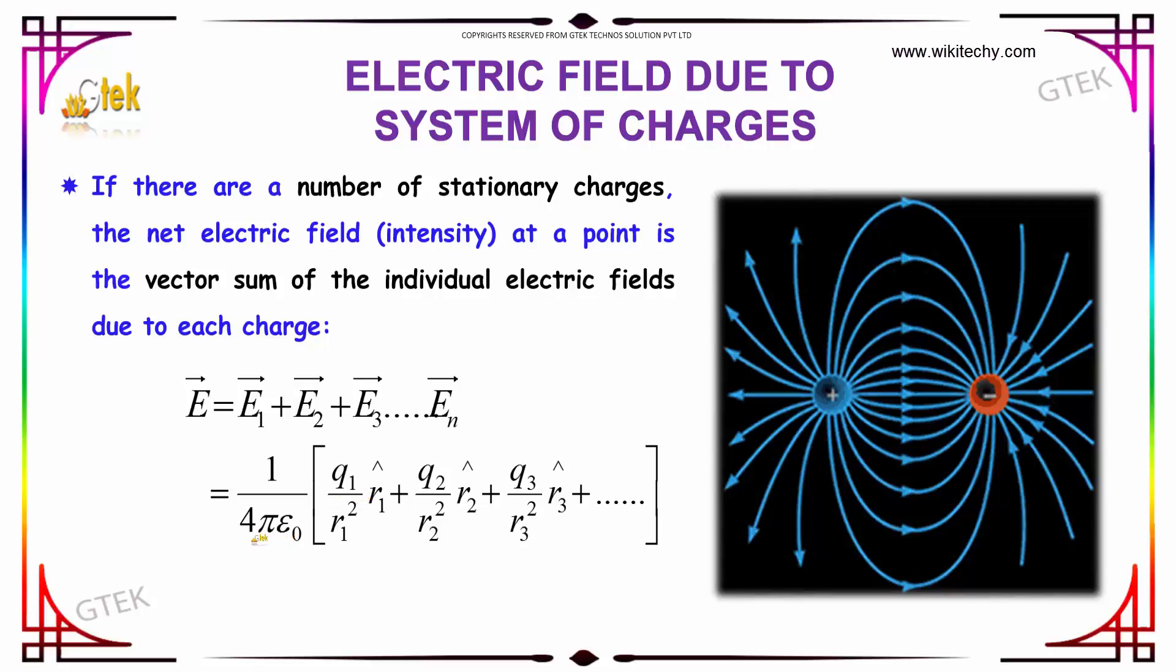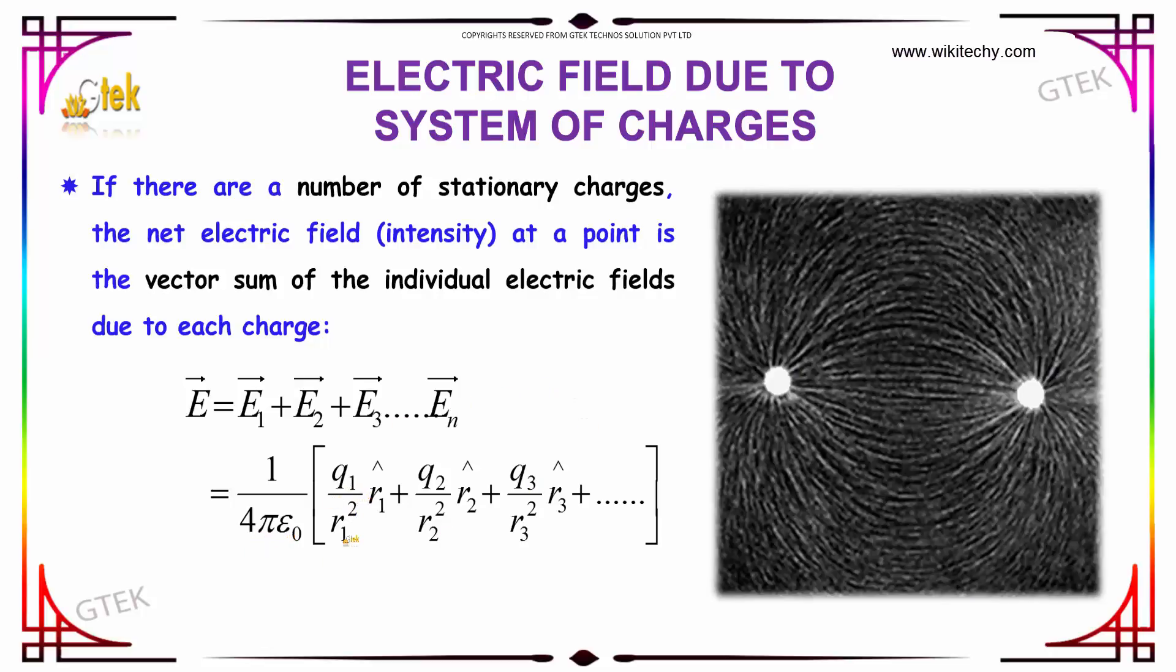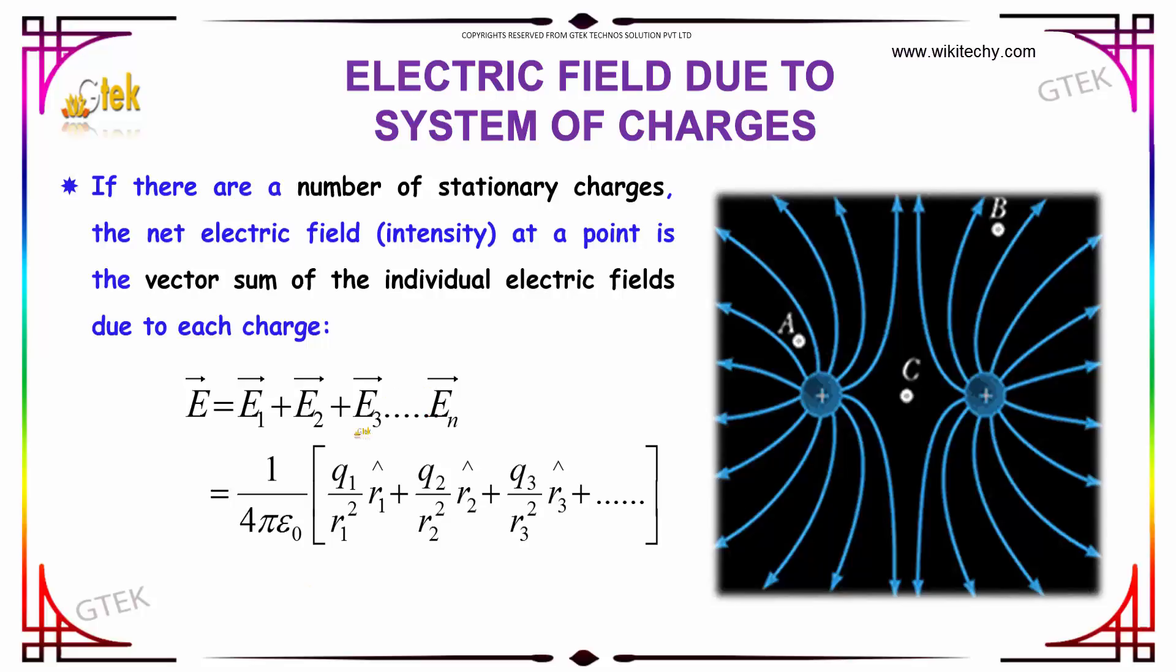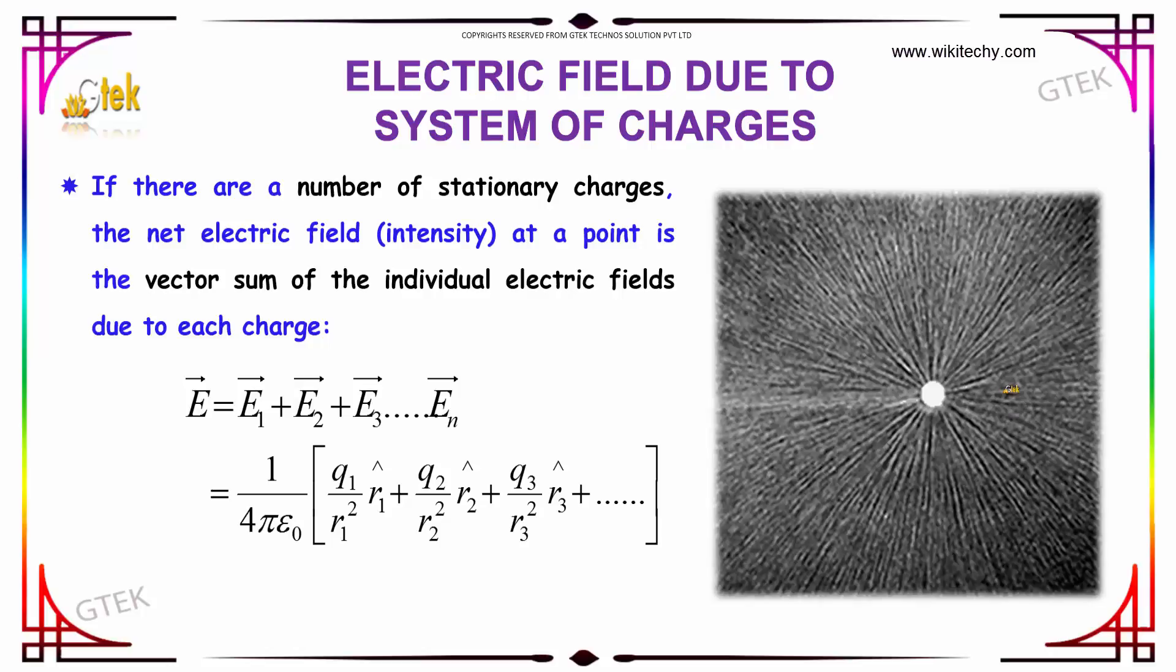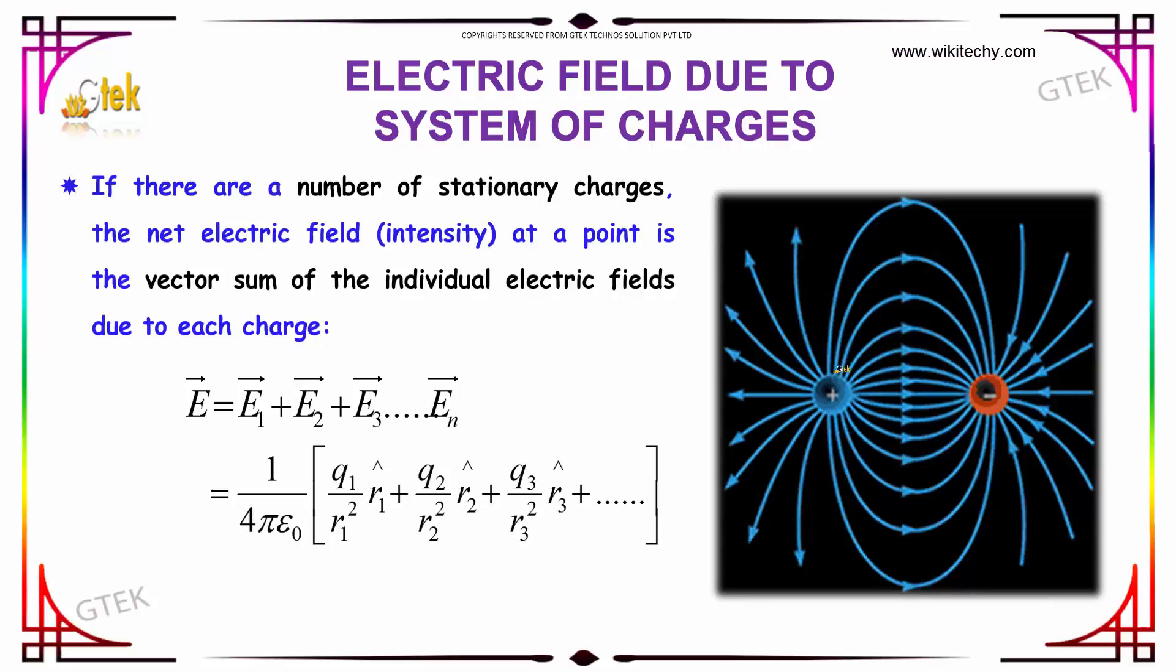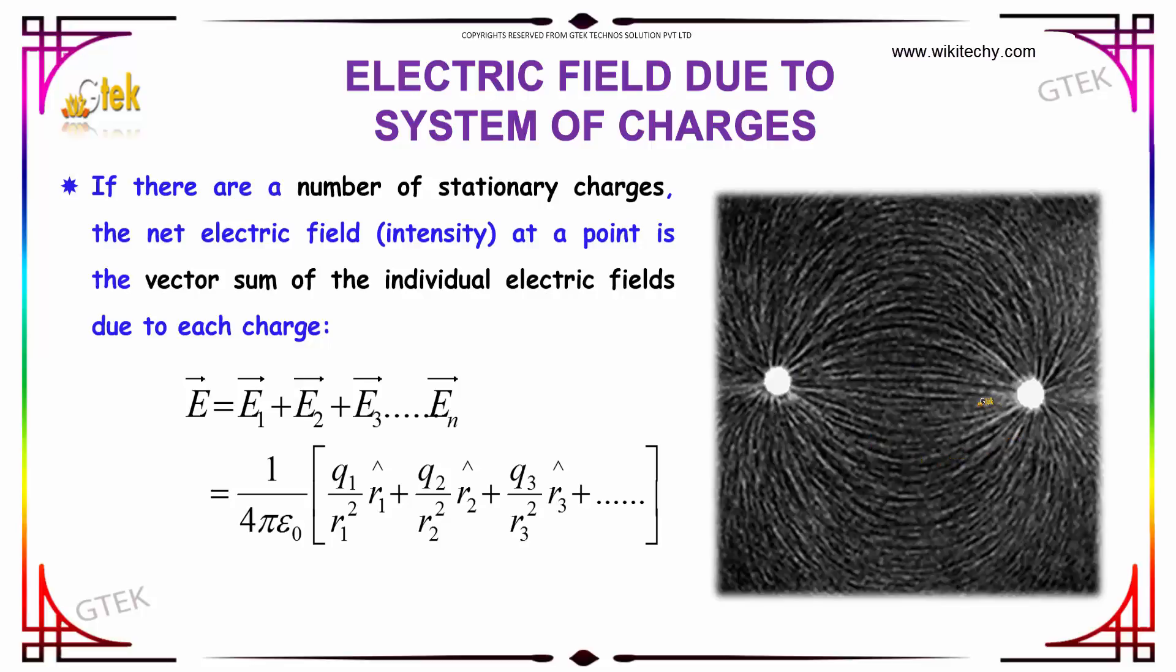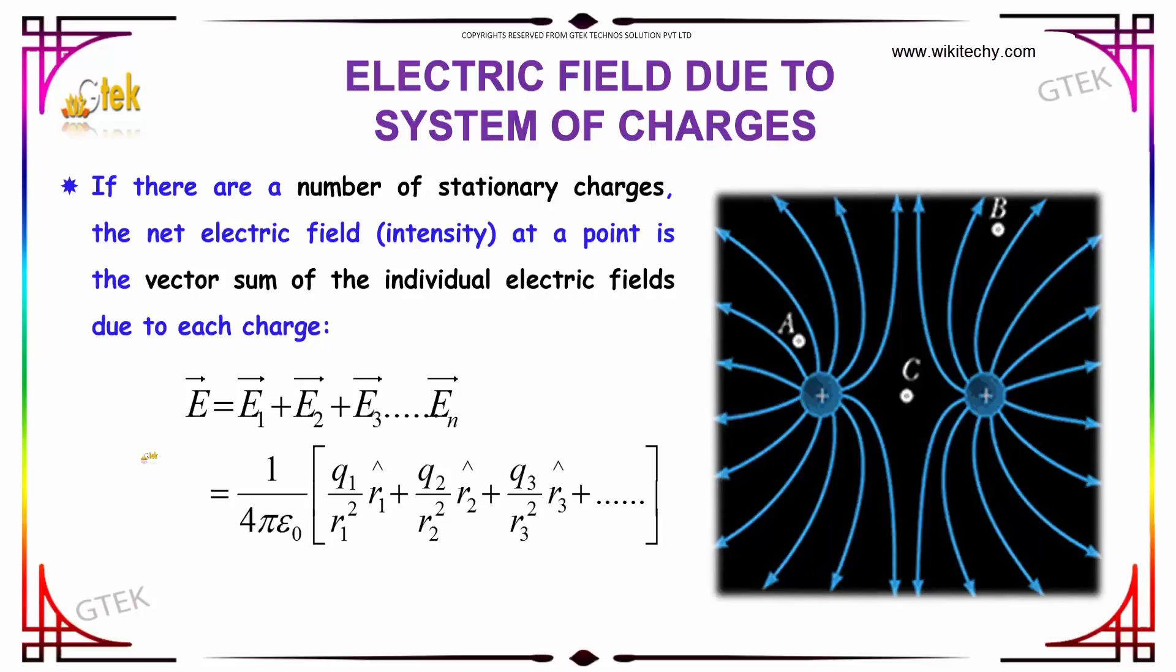Let us discuss the electric field due to system of charges. If there are a number of stationary charges, you can see the number of stationary charges here. The net electric field at a point is the vector sum of the individual electric fields due to each charge.